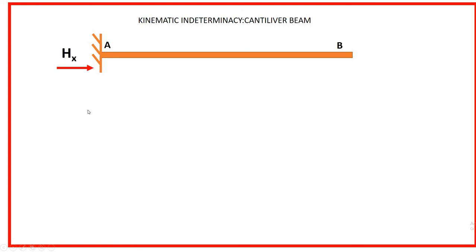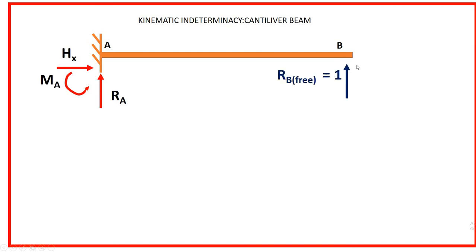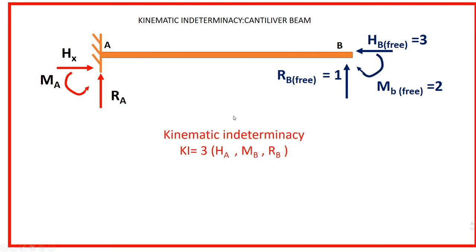For the cantilever beam, the fixed support has three reactions and can resist all three. The free end B does not carry any reactions, so all three reactions are free at the free end. Therefore the degree of freedom for the cantilever beam is also three, and kinematic indeterminacy is three.